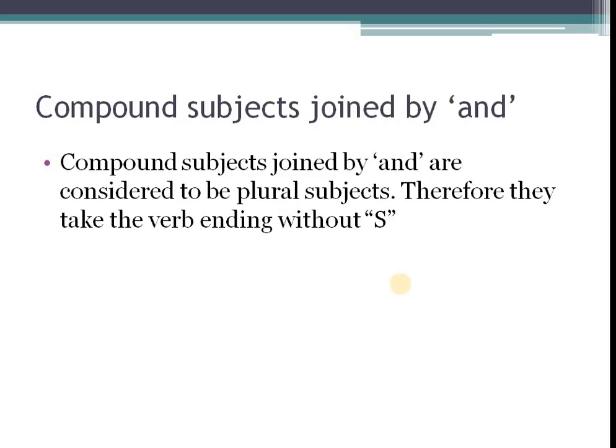And so, let's just look at compound subjects joined by and. Compound subjects joined by and are considered to be what? Plural subjects. Therefore, they take the verb ending without S. And remember, when you have two things that are coming together joined by and, it becomes two individual things joined by and, it becomes two. So, that's more than one, therefore, plural examples.